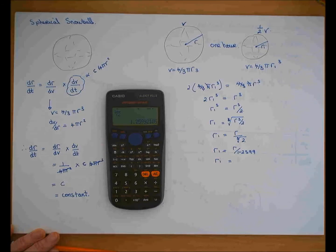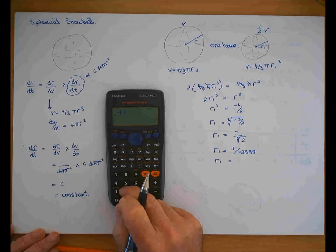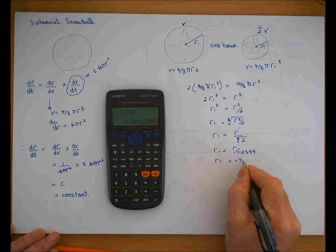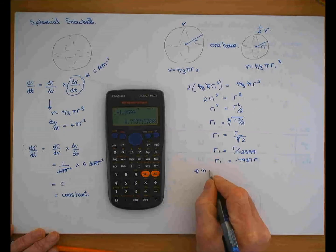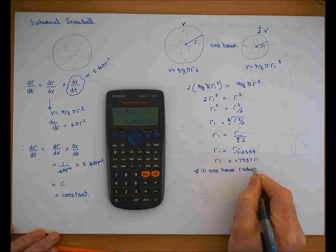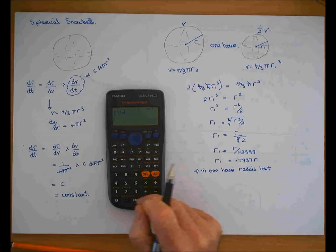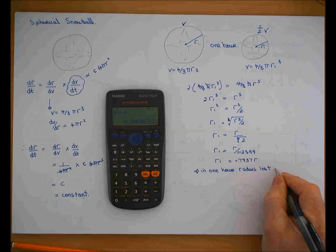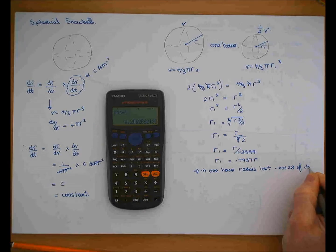The cube root of 2 is equal to r over 1.2599. So r₁ is equal to r divided by 1.2599, which equals 0.7937 of r. So that means in 1 hour the radius loses, I'm going to work it out, it loses 0.20628 of its length.